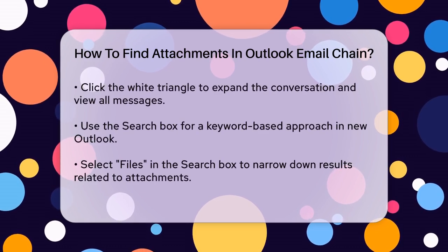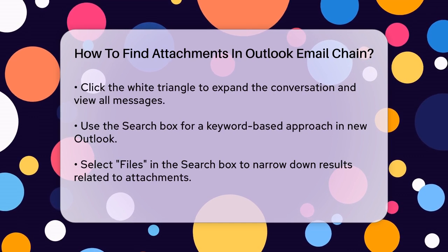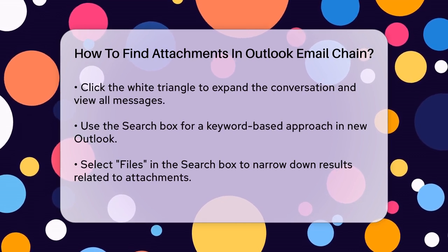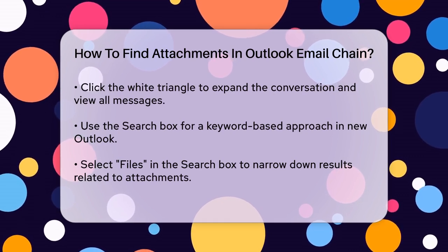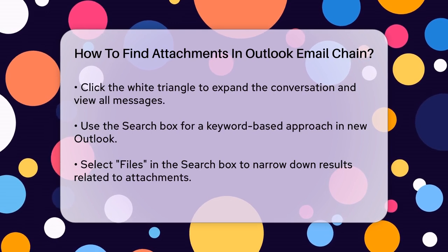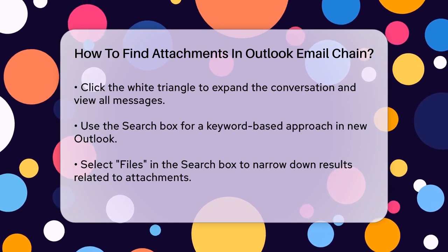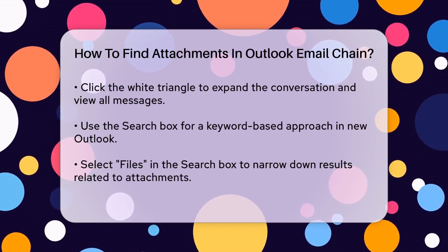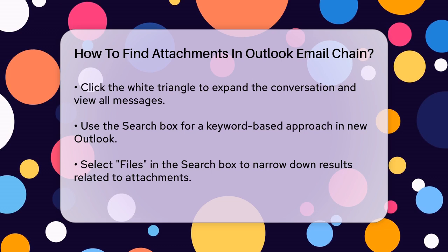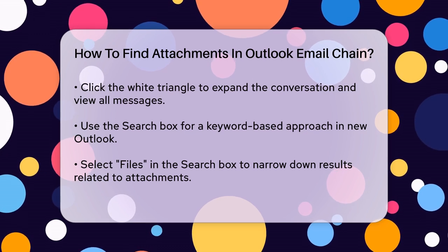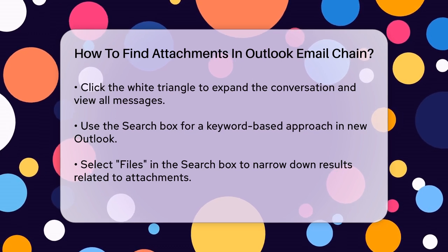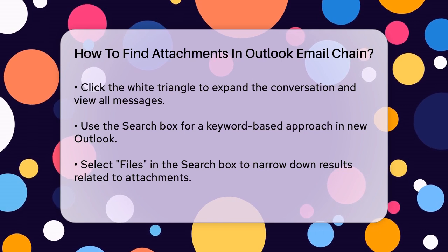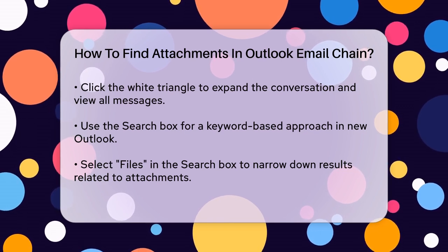If you're using a different version of Outlook or prefer a search-based approach, you can use the search box. In New Outlook, click in the search box, type a keyword related to the attachment or the email, and then select Files to narrow the search. You can also use the advanced search feature by checking the Attachments box to show only messages with attachments.